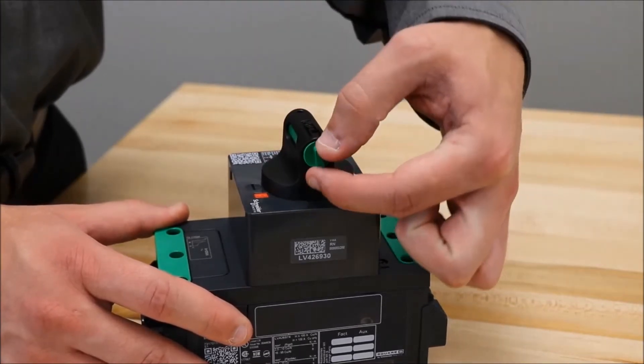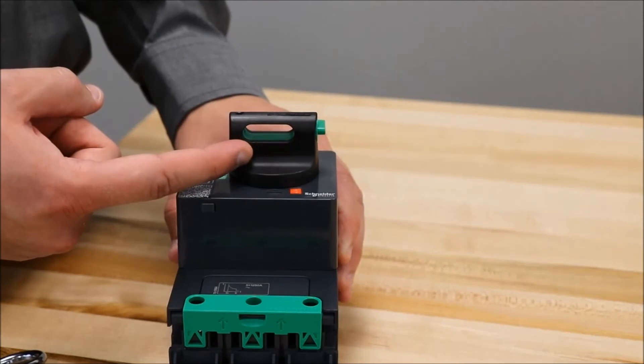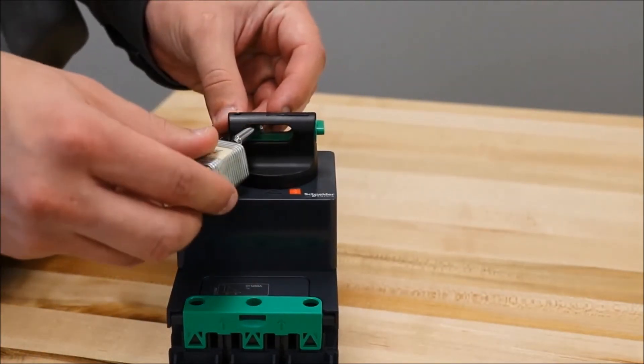You would turn this which opens this slot up in the handle so that the padlock can be put through it.